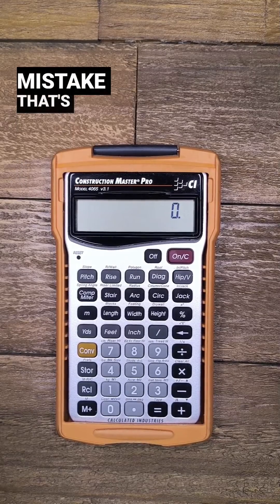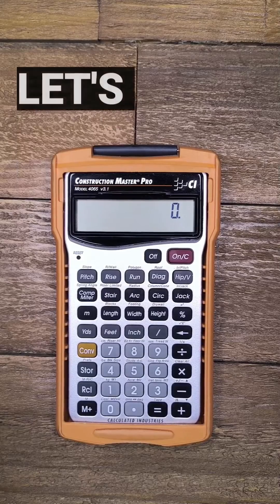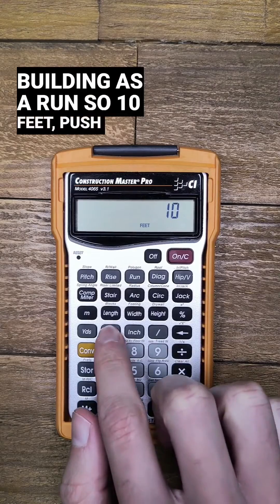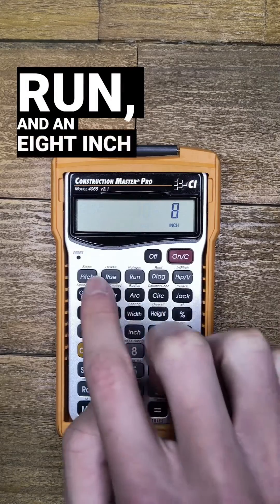The first mistake that's easy to make is using the theoretical run. Let's enter half the span of the building as a run, so 10 feet, push run, and an 8 inch pitch.